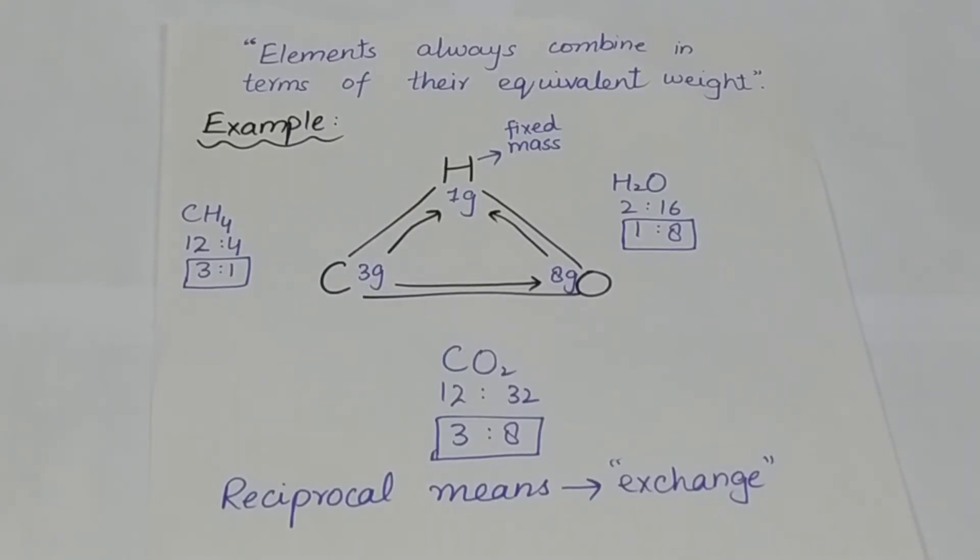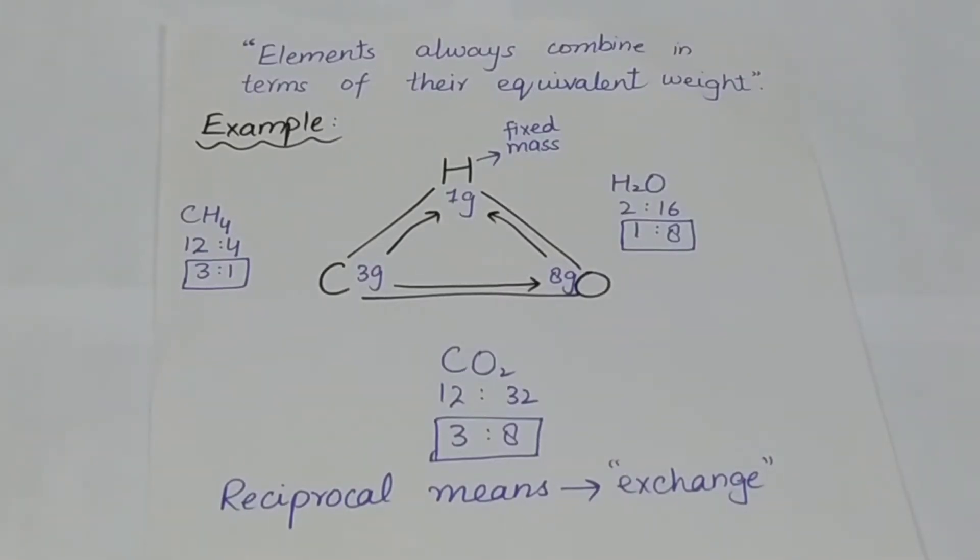When carbon is combined with hydrogen, CH4 is produced, which is methane. The mass of carbon is 12 and that of hydrogen is 1, and there are 4 hydrogen, so 12 ratio 4, and we simplify this ratio as 3 ratio 1.